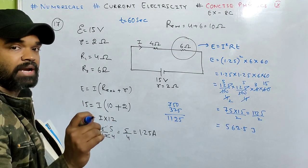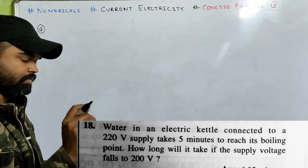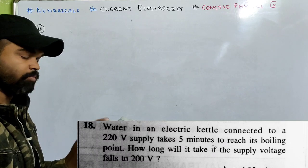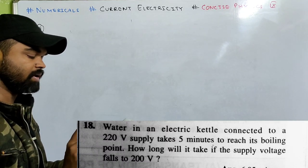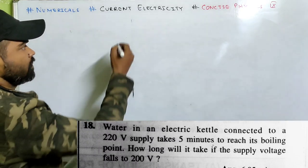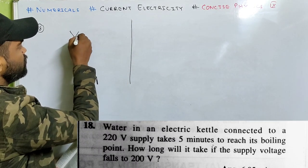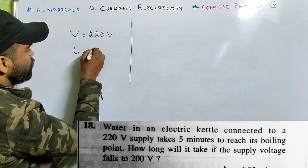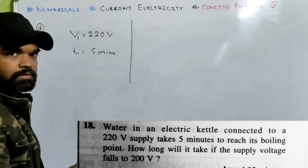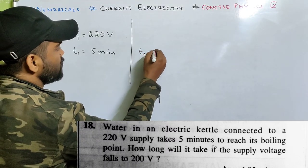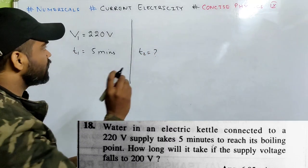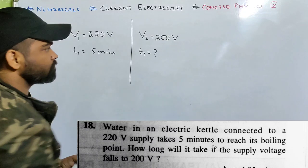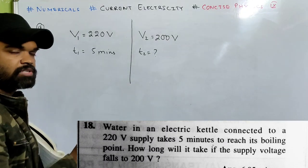Let's look at number 18. Water in an electric kettle connected to a 220 volt supply takes 5 minutes to reach its boiling point. How long will it take if the supply voltage falls to 200 volt? Now there are two cases. When the supply voltage was 220 volt, the time taken was 5 minutes. What will be the time taken to reach its boiling point if the voltage now becomes 200 volt?